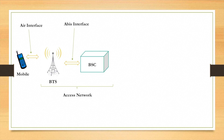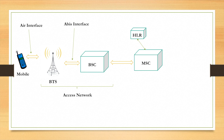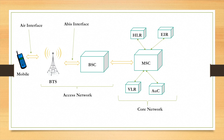The BTS then interacts with the BSC over the Abis interface. The BTS and BSC combined together are called the access network. The BSC interacts with the MSC, which has various components: the HLR, the VLR, the EIR, and the AUC — all combined together forming the core network. The BSC and MSC interact over the A interface, and the MSC at its end interacts with the PSTN.